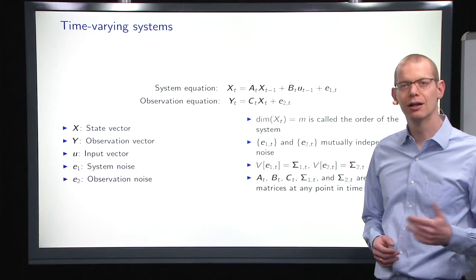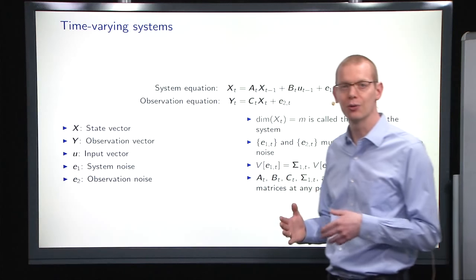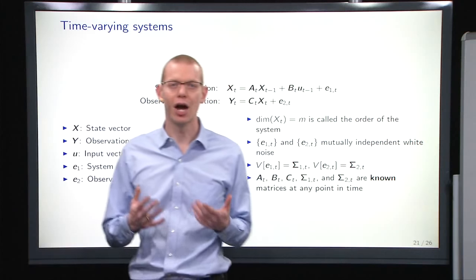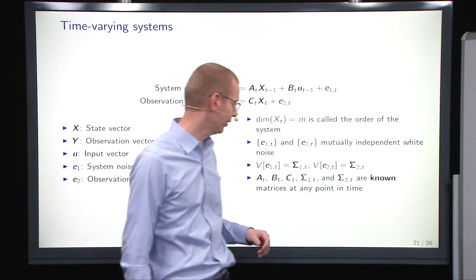So far what we looked at are systems where parameters are fixed throughout the entire time period. Now, what if some of these parameters are actually changing over time because of other things?